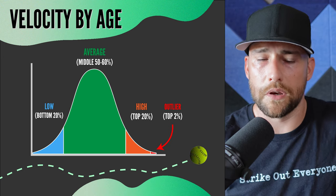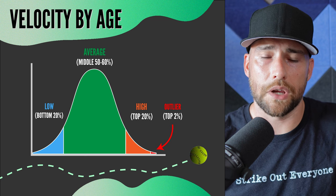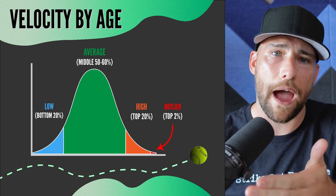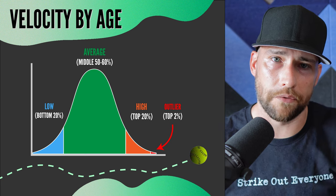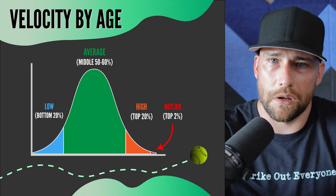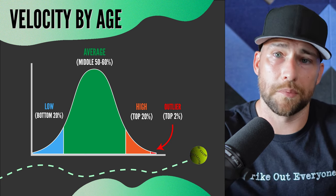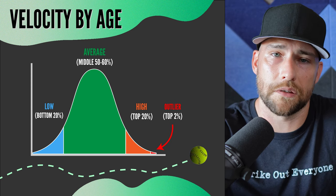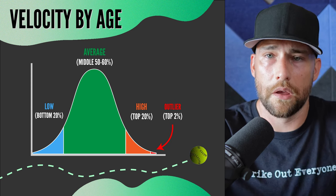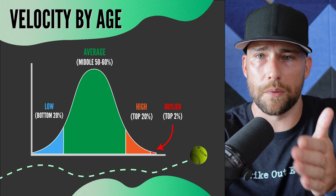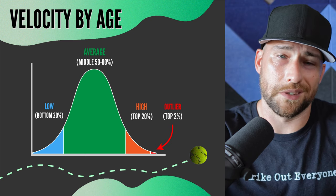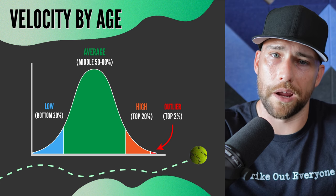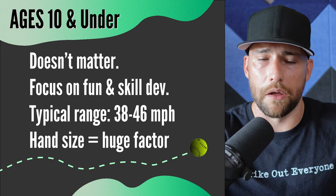In this video, we'll talk about velocity by age covering the low end, the average, and the high end, and the outliers for any given age bracket. We're going off the bell curve — most players will be in the middle, which is roughly 50 to 60 percent, then the bottom 20 percent, the top 20 percent, and outliers are like the top 2 percent — about one out of every 50 players might throw that hard.